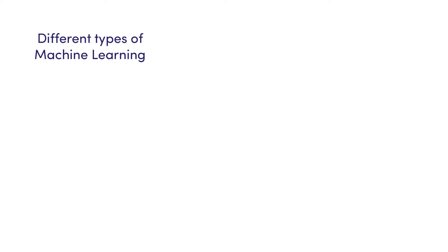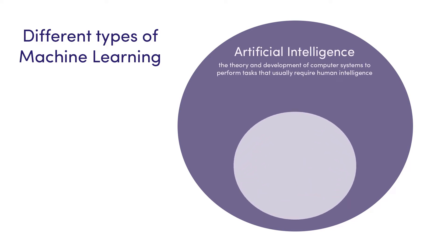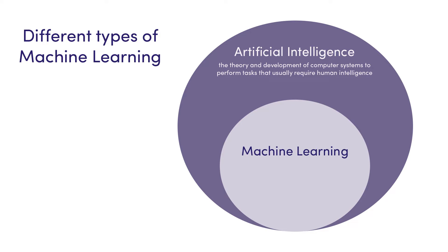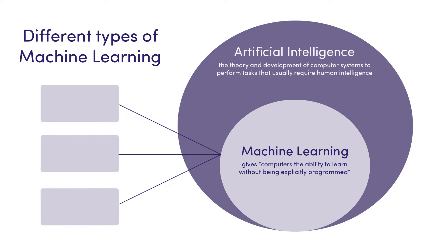Machine learning is a subset of overall artificial intelligence and the general term for when computers learn from data. It describes the intersection of computer science and statistics, where algorithms are used to perform a specific task without being explicitly programmed. Instead, they recognize patterns in the data and make predictions when new data arrives. This is the basis for categorizing machine learning into three broad categories: supervised learning, unsupervised learning, and reinforcement learning.